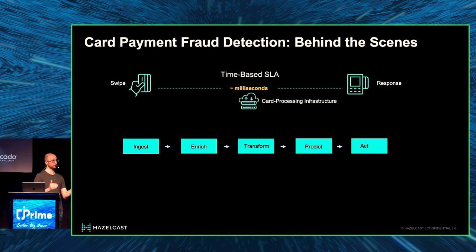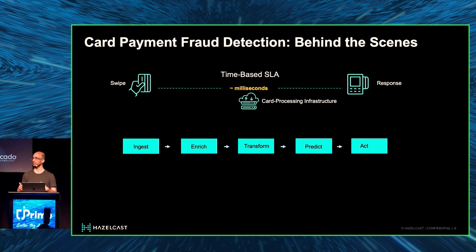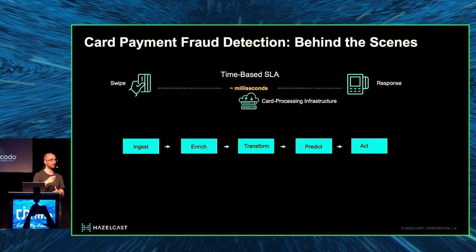It looks like a straightforward process. You ingest the data, you do some kind of enrichment — adding more data to the transaction — you do data transformation, and then you do some kind of prediction. This is where machine learning comes in if you're using real-time microservice ML. And that's the final act: your bank accepts or rejects your transaction.